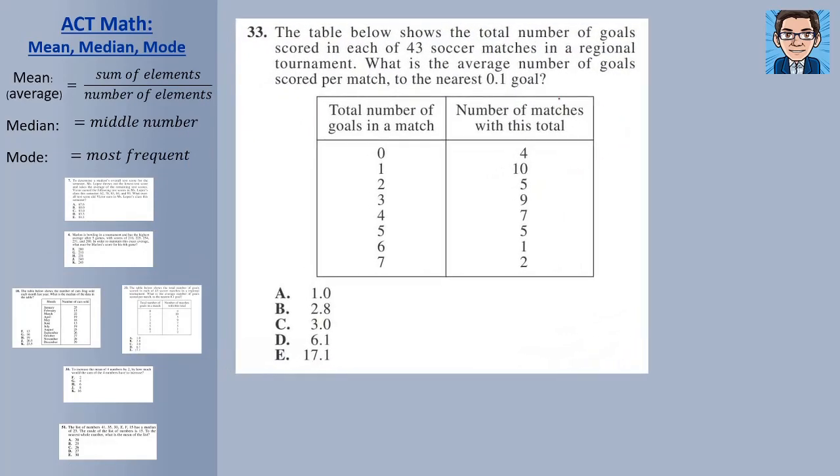In the fourth problem, we have a table here that shows the number of goals in a match. So we got zero goals in four matches. One goal we did in 10 different matches. And it tells us that we have 43 soccer matches. We could actually have added this and got the 43. And we want to find the average per match.